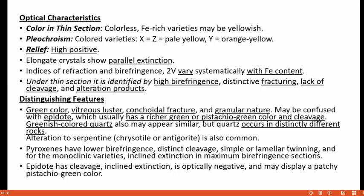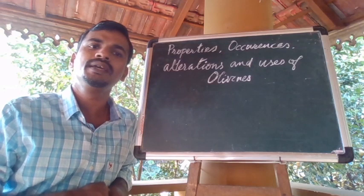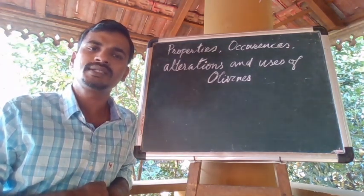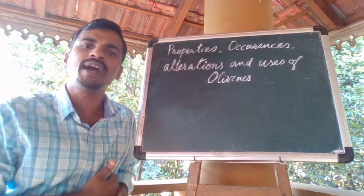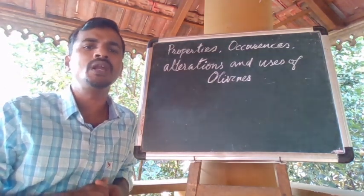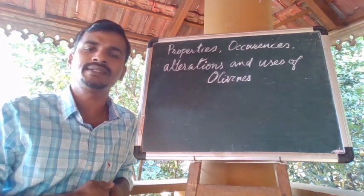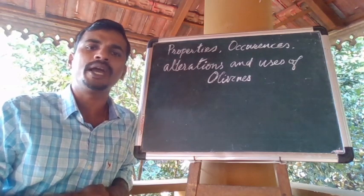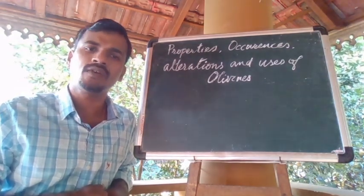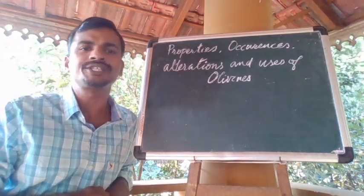Regarding optical characteristics, olivines are generally colorless under thin section. However, iron-rich varieties may show a yellowish color and pleochroism from pale yellow to orange yellow. Another important characteristic is that olivine shows high positive relief. Crystals elongated parallel to the c-axis show parallel extinction. Indices of refraction and birefringence are also characteristic. The 2V angle varies systematically with iron content. Under thin section, olivine is identified by high birefringence, distinctive fracturing, poor cleavage, and alteration products.